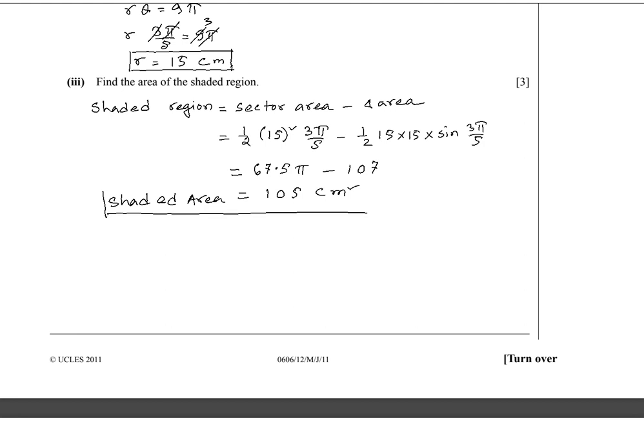The area of the shaded region (segment) is 105 cm². Question 9 has been completed. Let's move on to question 10 on the next page.